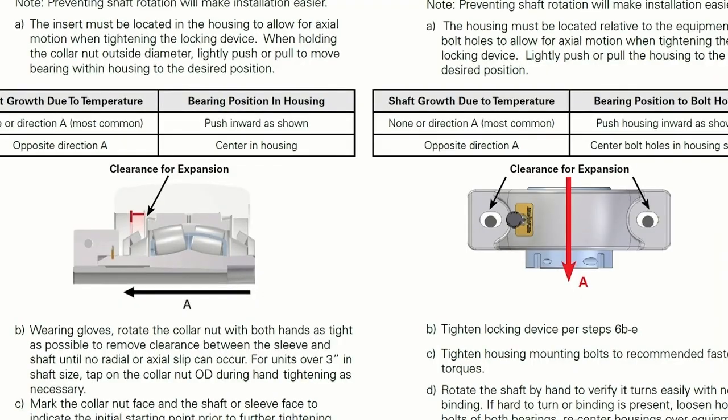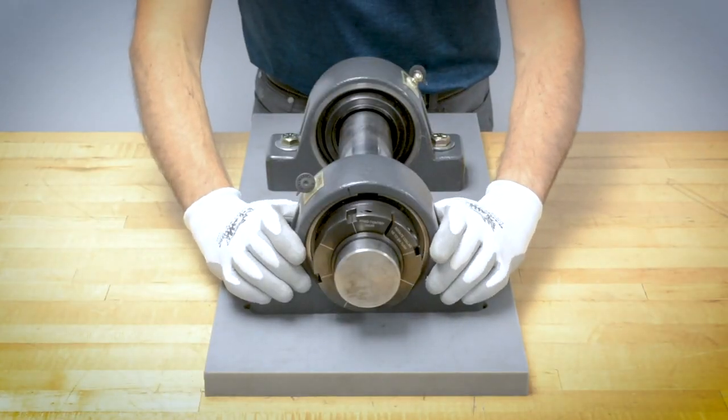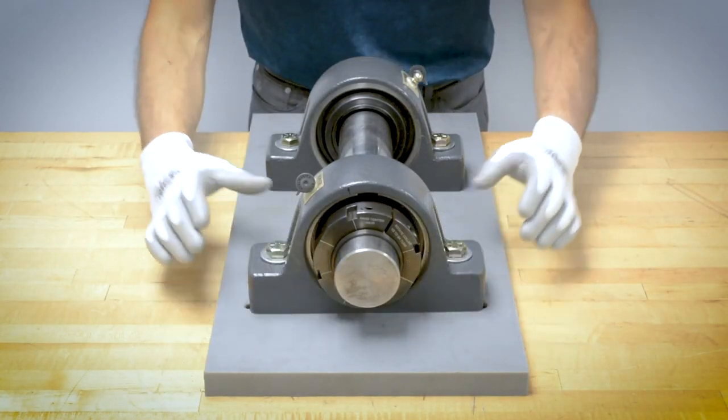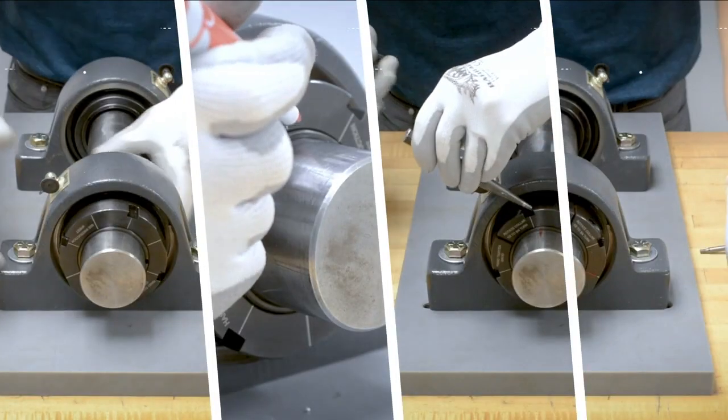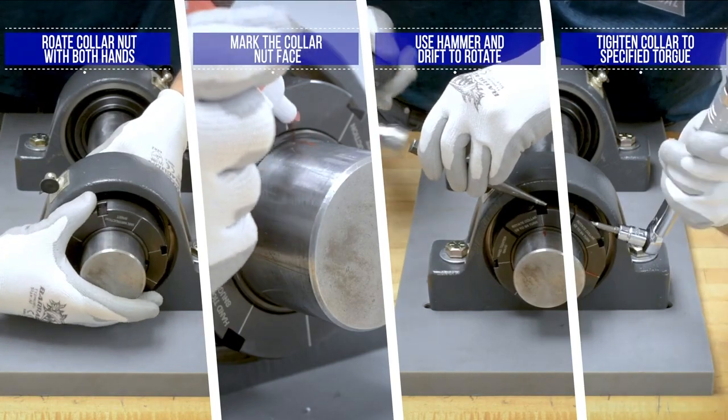When mounting the expansion unit, position the bearing within the housing opposite the direction of expansion. For most applications, this means pushing the insert into the housing. After the expansion bearing is adjusted, install the bearing following the previous steps.